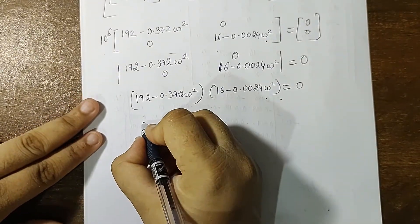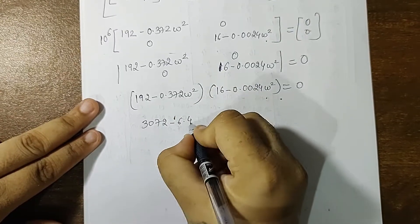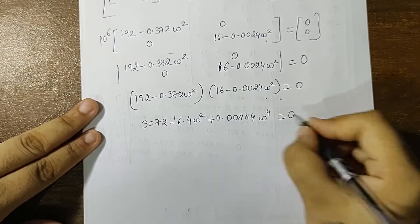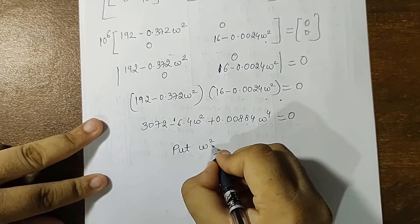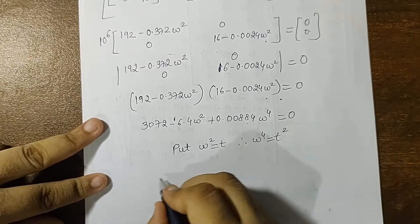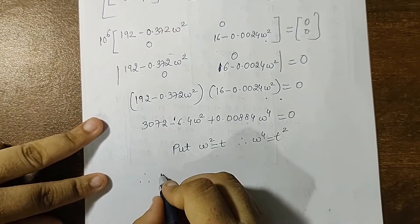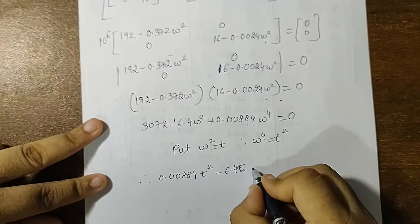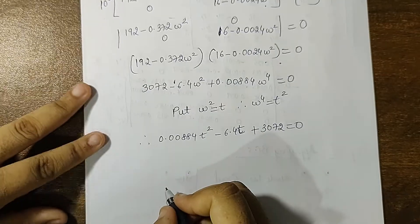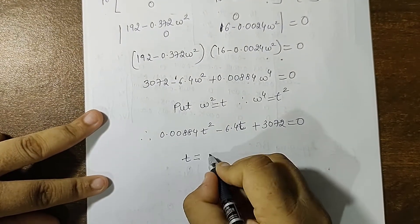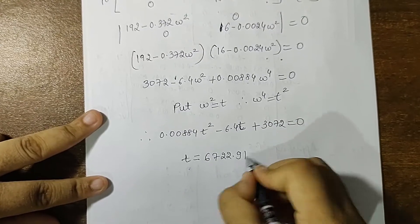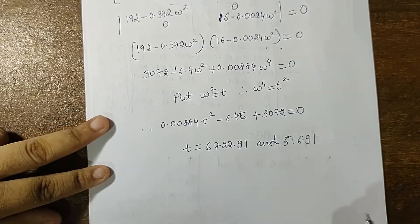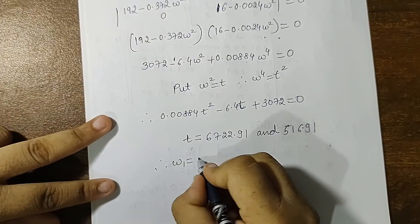Now I'll cross multiply and calculate the value of omega. Let's multiply, so I get the equation as 3072 minus 6.4 omega square plus 0.00884 omega raised to 4 is equal to 0. So let me put omega square as t, therefore omega raised to 4 will be t square. Therefore I get this equation as 0.00884 t square minus 6.4 t plus 3072 is equal to 0.